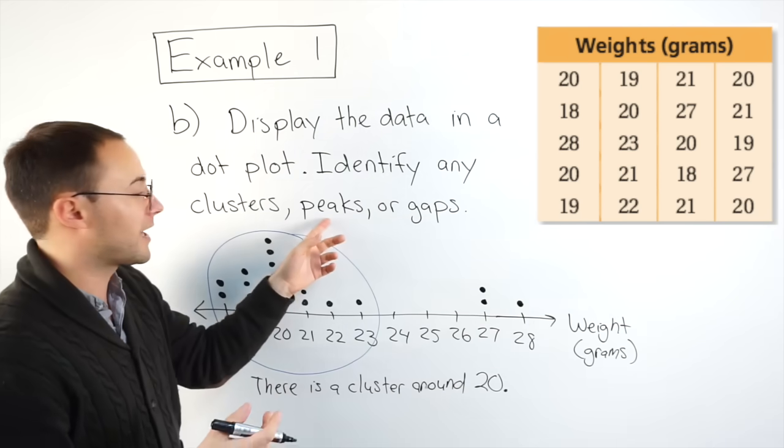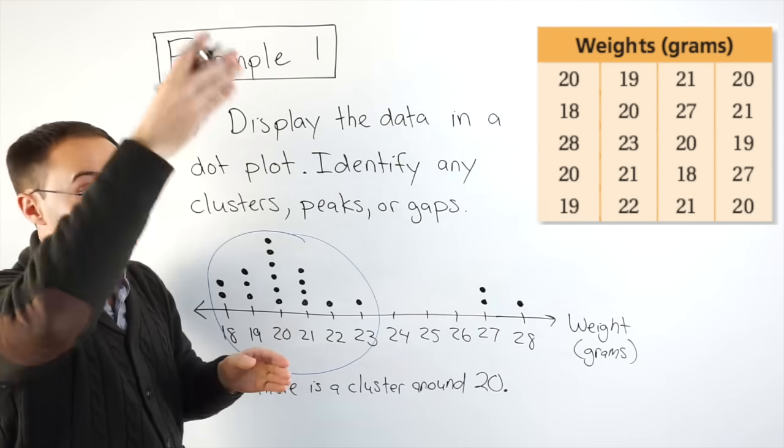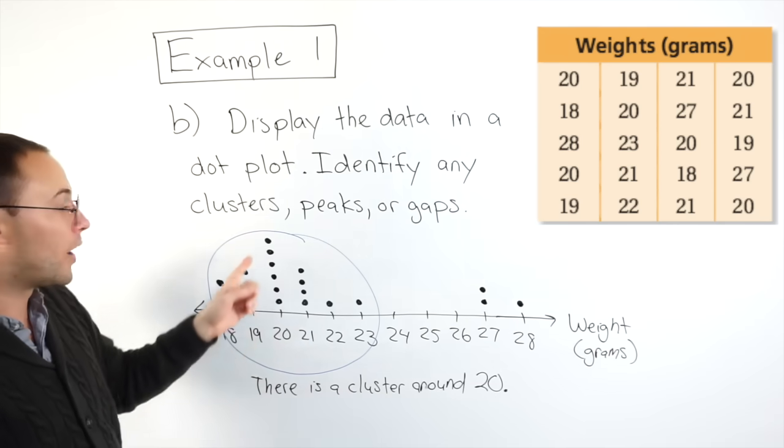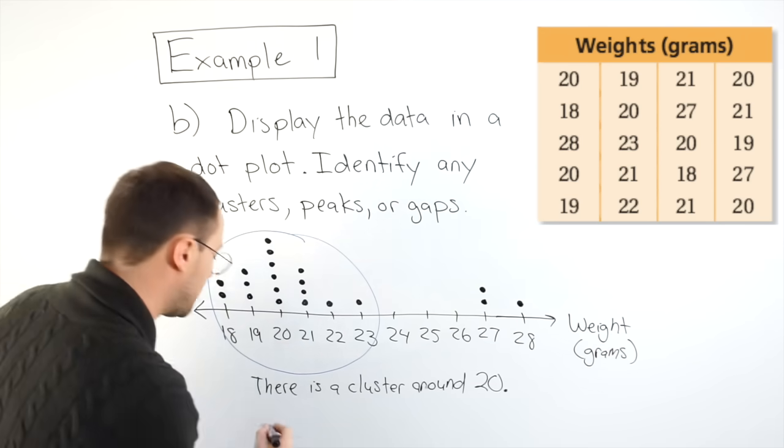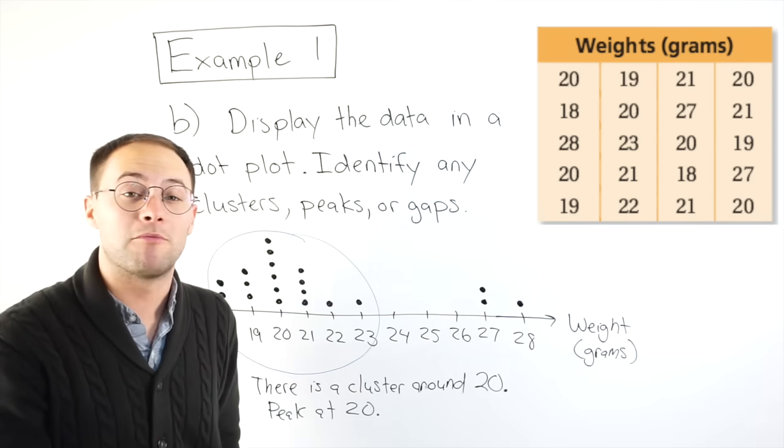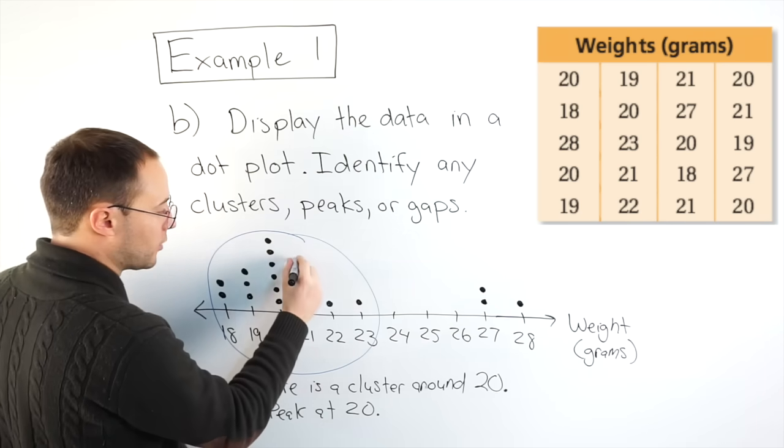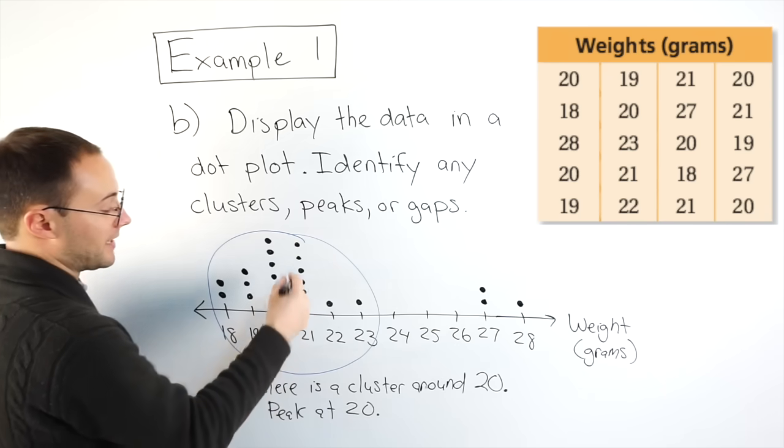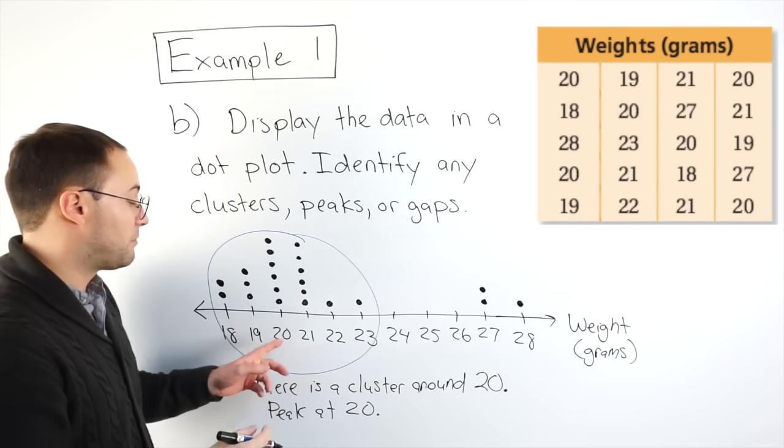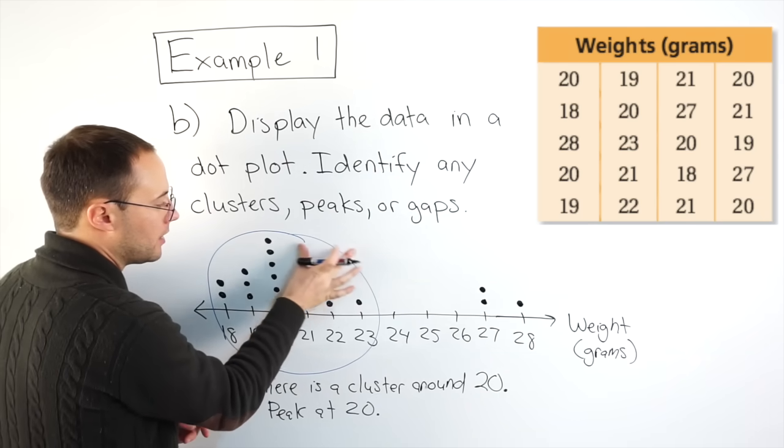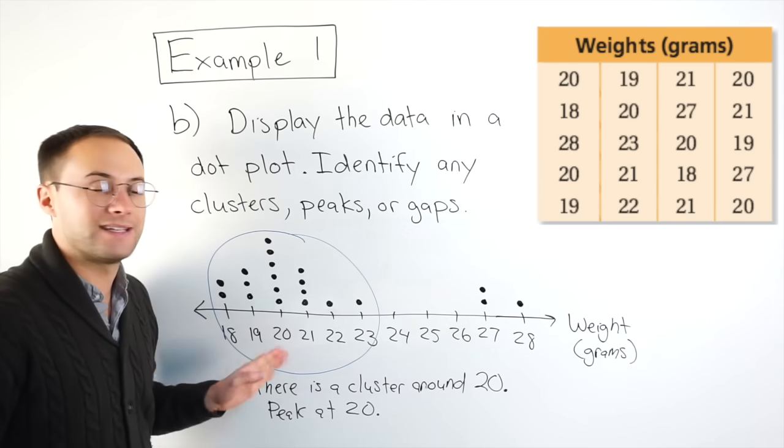Peaks. Well, hopefully you can kind of guess what that is. That's just, are there any things where it's the tallest? So right here, again, 20, there is a peak at 20. And same thing, it's possible to have more than one peak. If, for example, 21 also went up to six, then we would say there's a peak at 20 and 21. But as of right now, there's only one peak because that is the tallest.